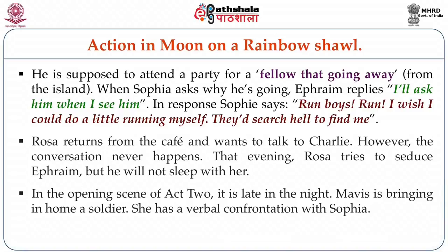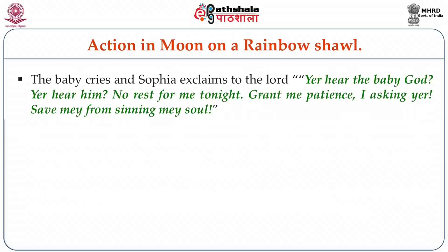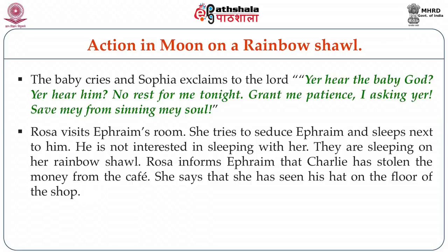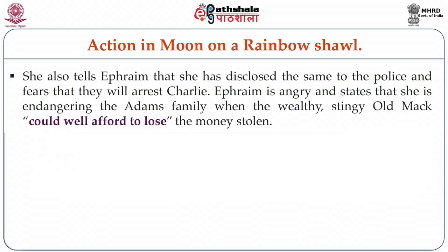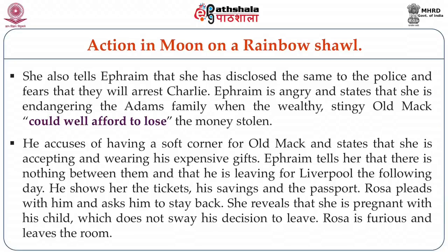In the opening scene of Act 2, it is late in the night. Mavis is bringing home a soldier and has a verbal confrontation with Sophia. The baby cries and Sophia prays, 'Ye hear the baby God, ye hear him. No rest for me tonight. Grant me patience, I am asking you. Save me from sinning my soul.' Rosa visits Ephraim's room and tries to sleep next to him, but he is not interested. They are lying on her rainbow shawl. Rosa informs Ephraim that Charlie has stolen the money from the café — she saw his hat on the floor of the shop — and that she has disclosed this to the police, fearing they will arrest Charlie. Ephraim is angry, accusing her of endangering the Adams family. He tells her there is nothing between them and he is leaving for Liverpool the following day, showing her the tickets, his savings and the passport. Rosa pleads with him to stay, revealing she is pregnant with his child, but this does not sway his decision. She is furious and leaves the room.